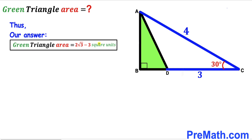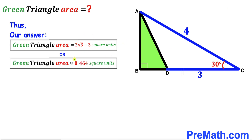After all calculations, the area of the green shaded triangle ABD is 2√3 − 3 square units. That's our final answer. Thanks for watching and please don't forget to subscribe to my channel for more exciting videos.